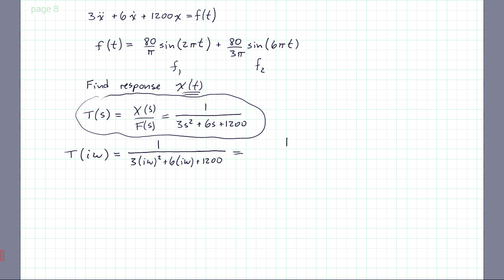And here's what you get: 1 over, this is after a couple of steps, 1200 minus 3ω² plus 6ωi. And I purposely put the imaginary stuff on one side and the real on the other. So obviously denominator, this is your real part and this is your imaginary part. So it's a vector.